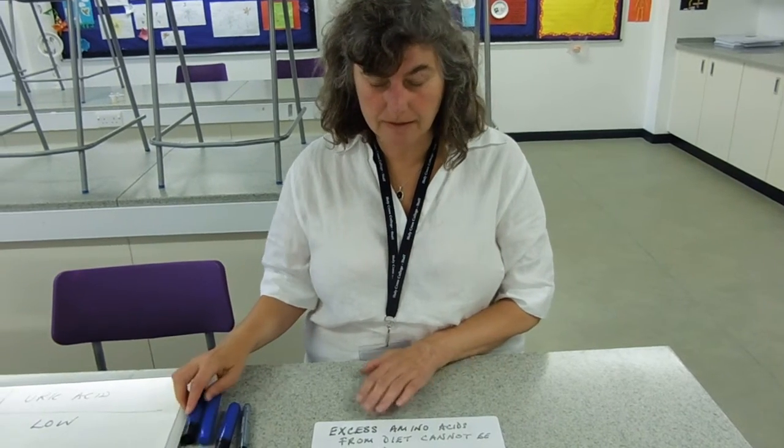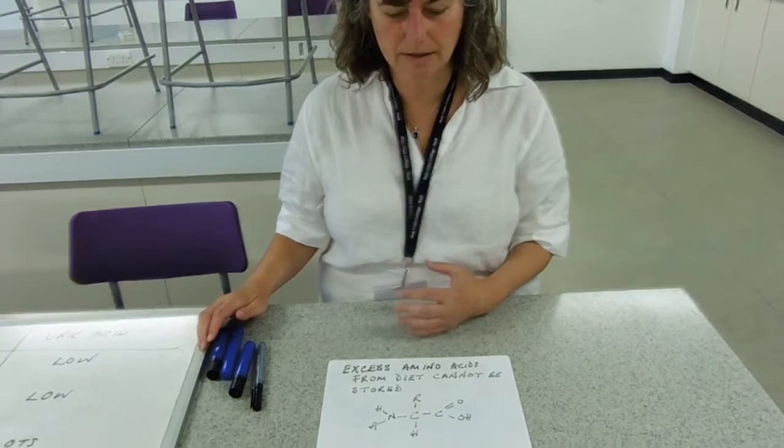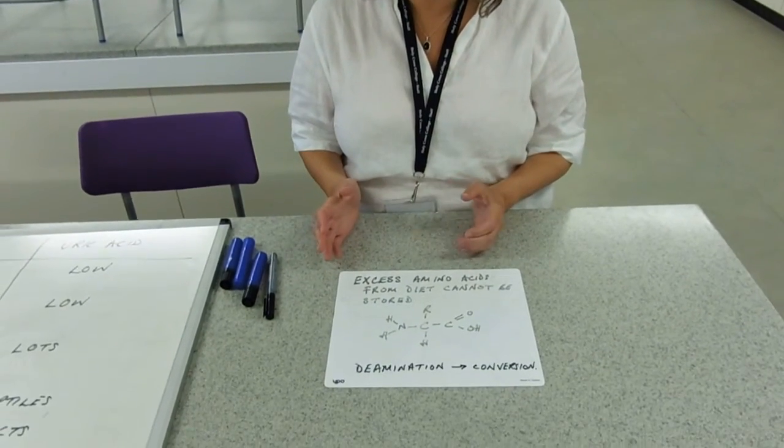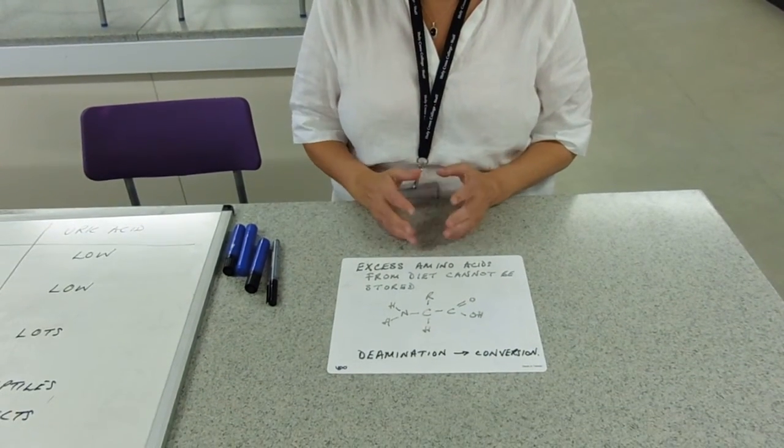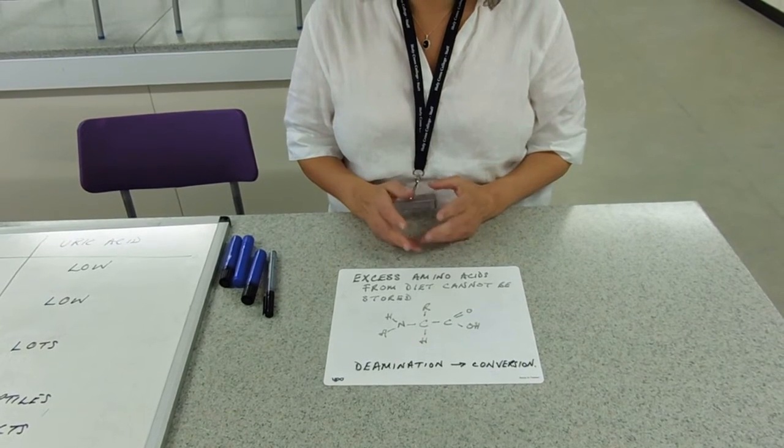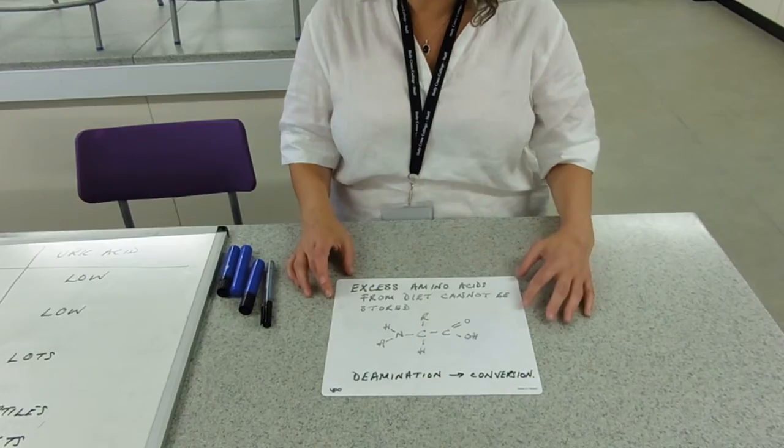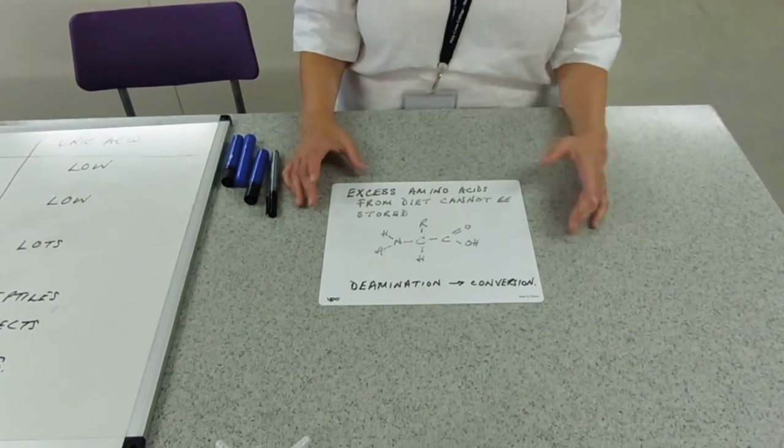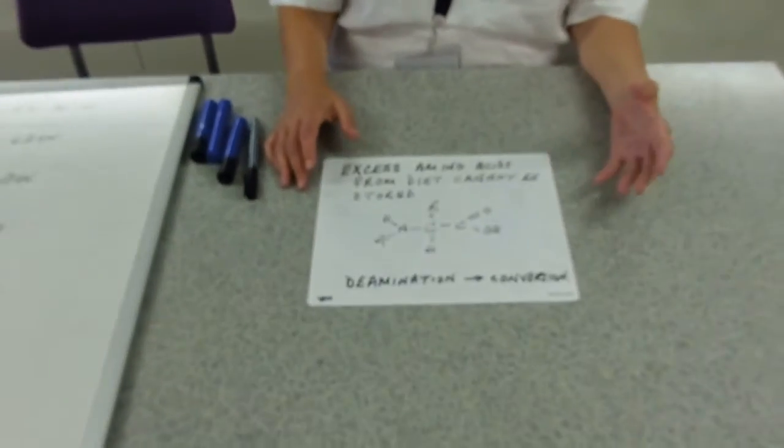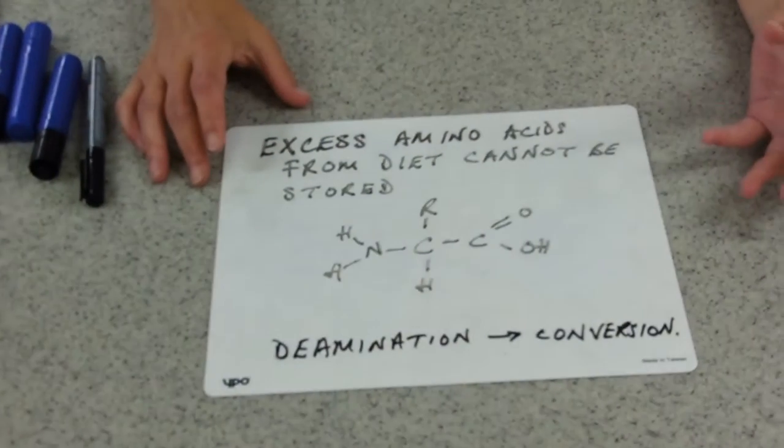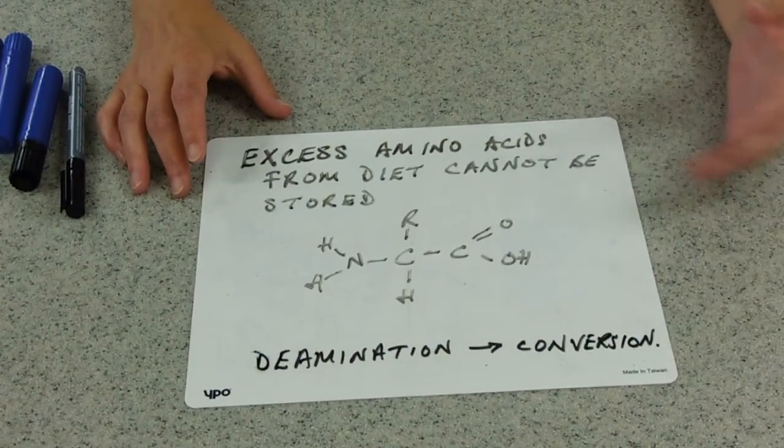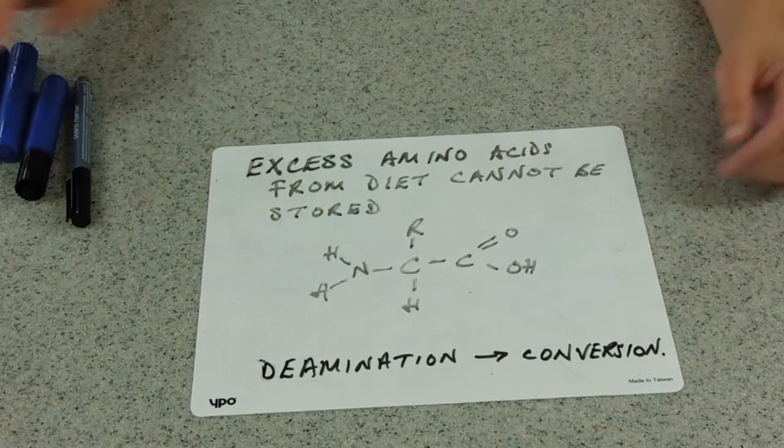So the key point here is that when you take in protein in the diet, you break it down into amino acids. And obviously we need the amino acids for growth. By growth really what we mean is making those cell components that are made out of proteins like enzymes and hormones and your immunoglobulins.